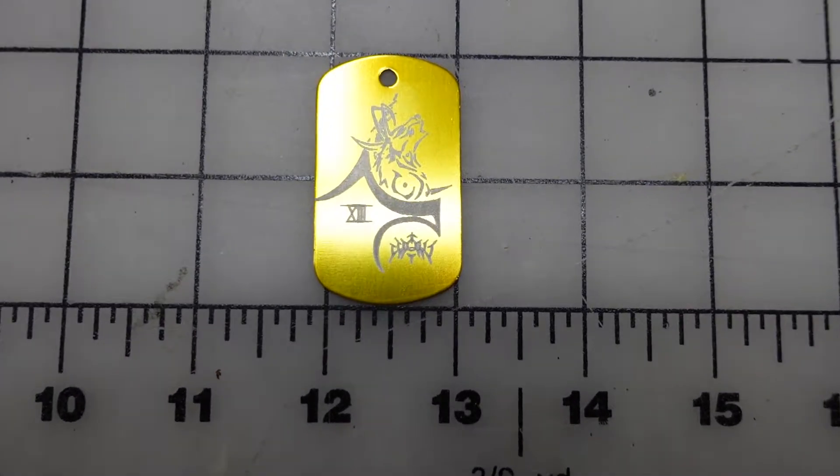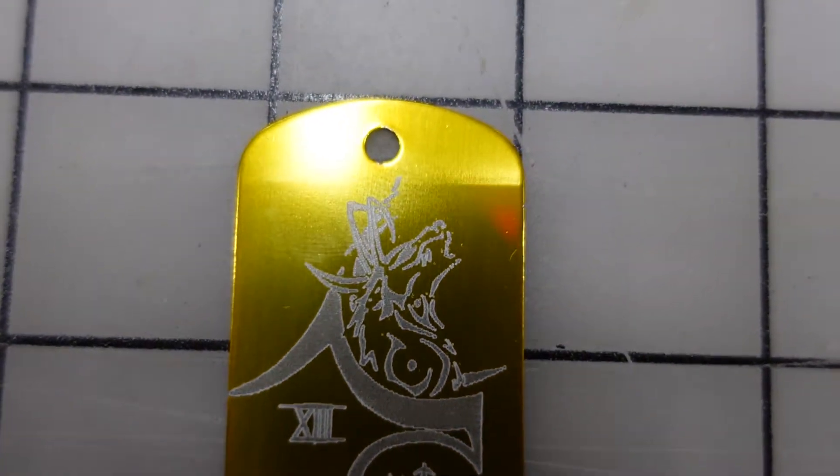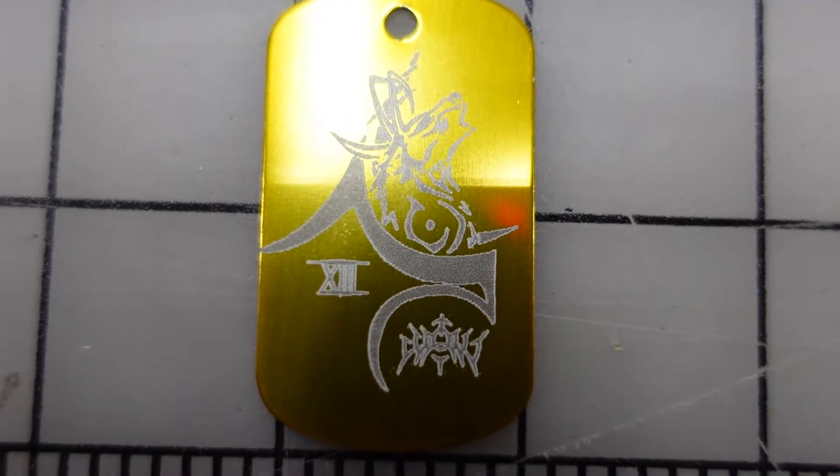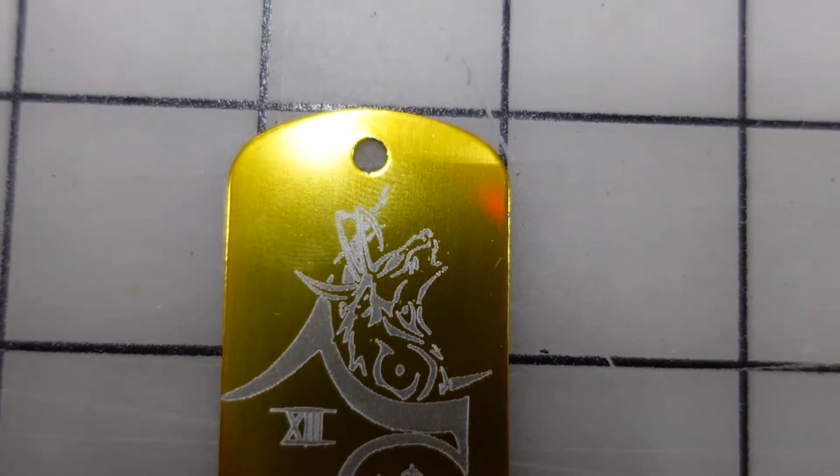Going in for a close up you can see the image quality on the anodized aluminum dog tag here. Again this is 30% power at 200 millimeters a second on the speed.